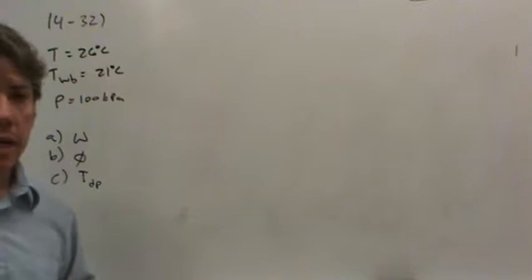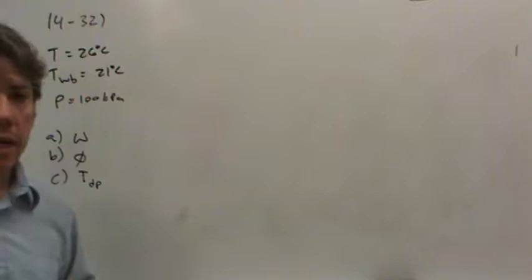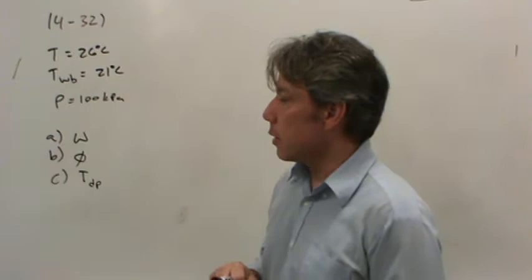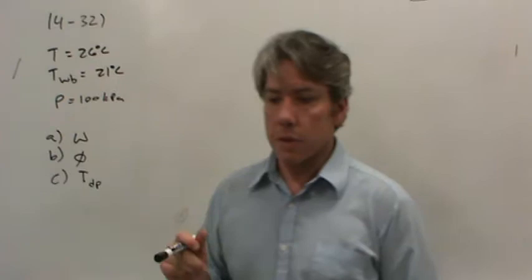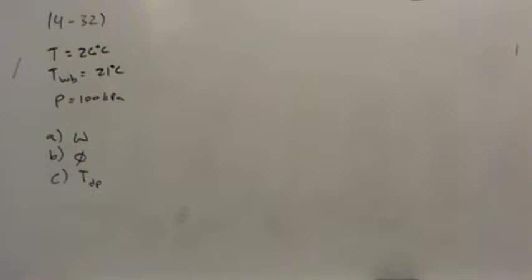Now, this is not going to be an ideal problem for the video because we're going to use a psychrometric chart. But I chose this problem intentionally so that we could. Notice the temperature of 100 kilopascals is not exactly 101.325, but it's pretty darn close. So we'll just use a psychrometric chart and neglect the error. We'll have as much error reading off the chart as we would in the difference between the pressures.